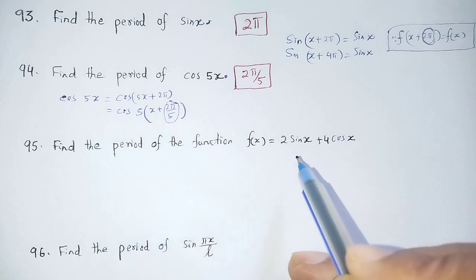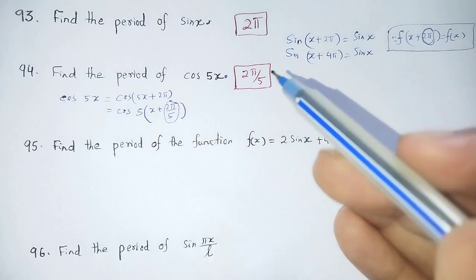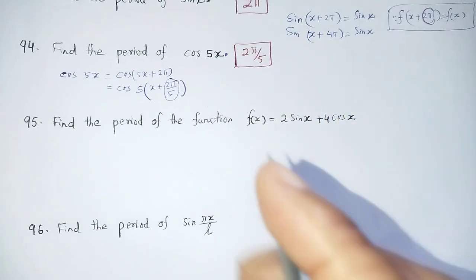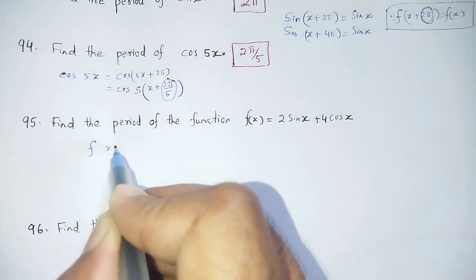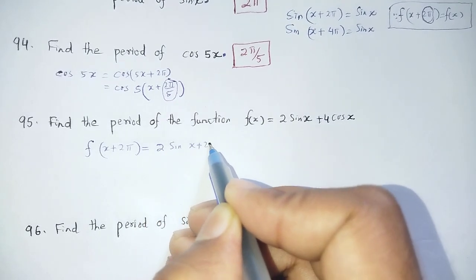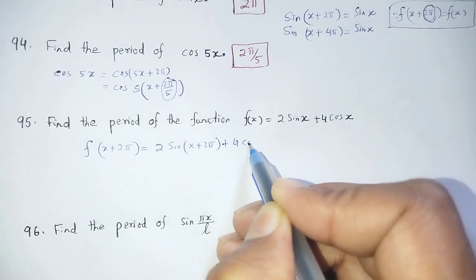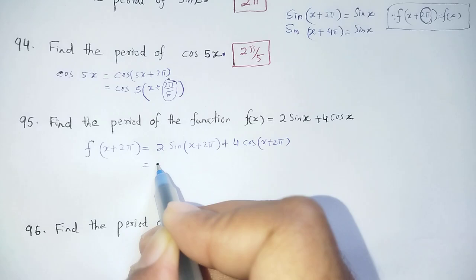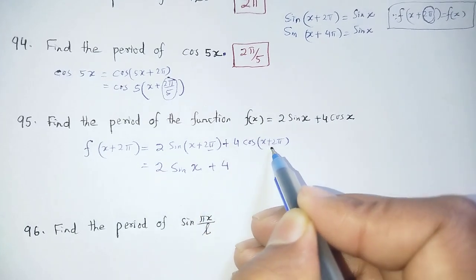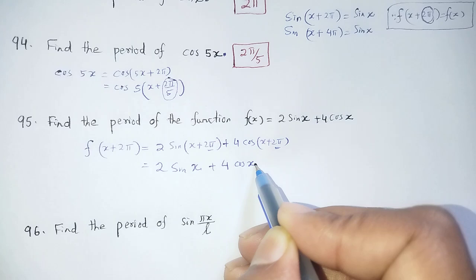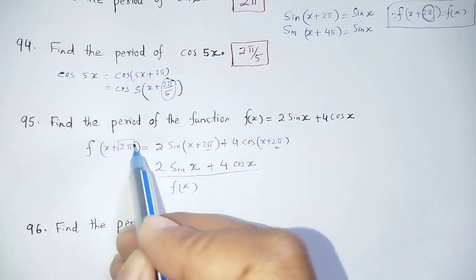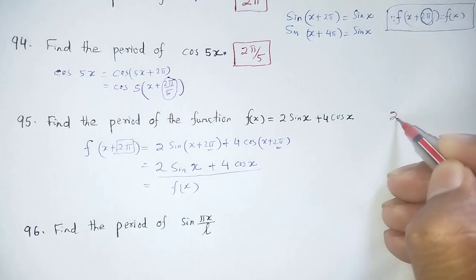Find the period of the function f(x) = 2sinx + 4cosx. Using the format f(x + 2π): we get 2sin(x + 2π) + 4cos(x + 2π). Since the period of sin is 2π and the period of cos is 2π, this equals 2sinx + 4cosx. So the period is 2π.